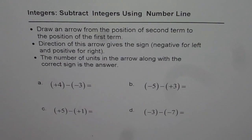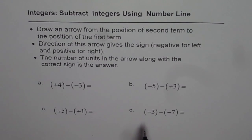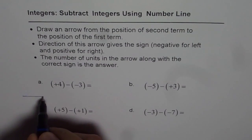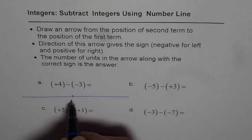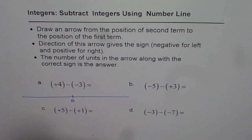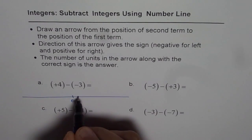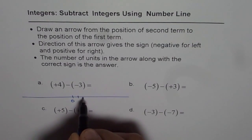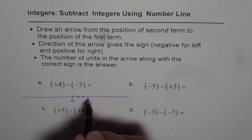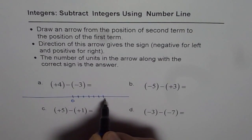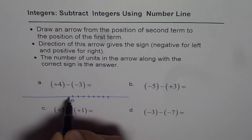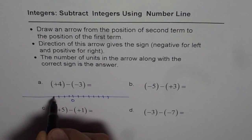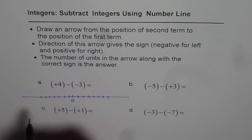On a number line, let us see how we can do this kind of subtraction. Let me first draw a number line. That is zero, and some numbers on the right side: positive one, two, three, four, five, six, seven. On the left, negative numbers: one, two, three, four, five, six, seven.